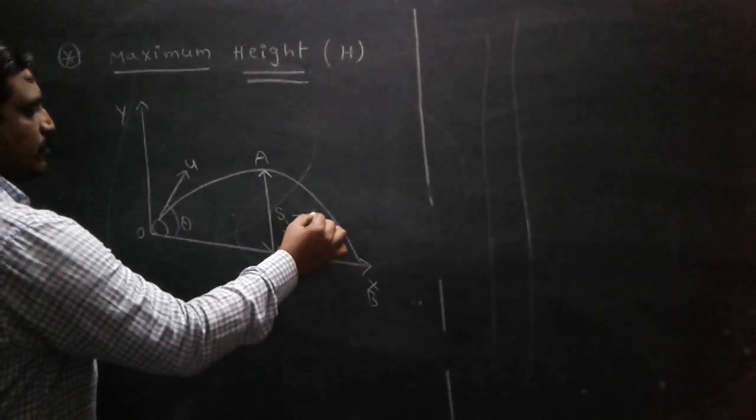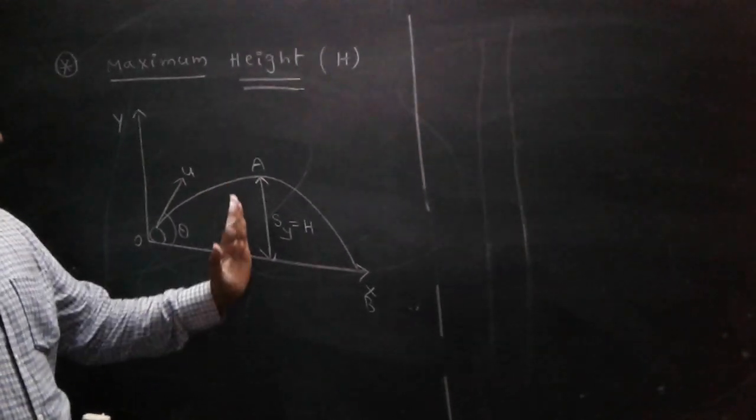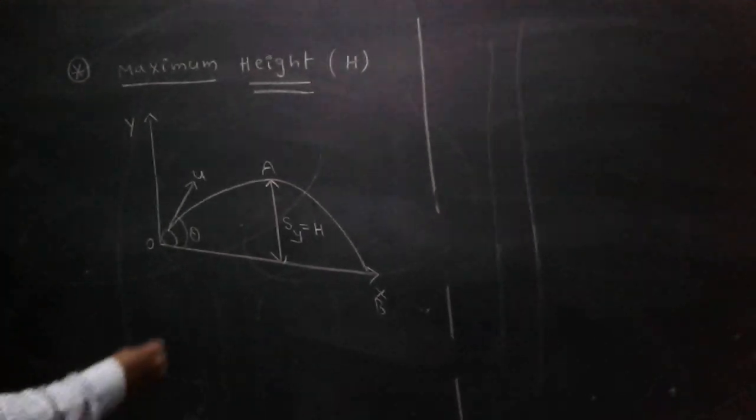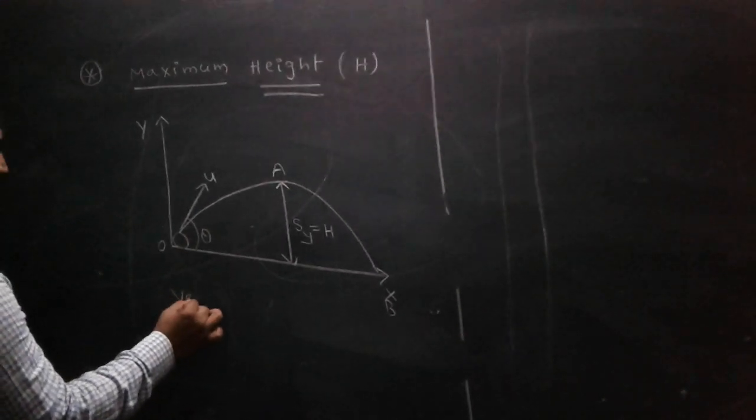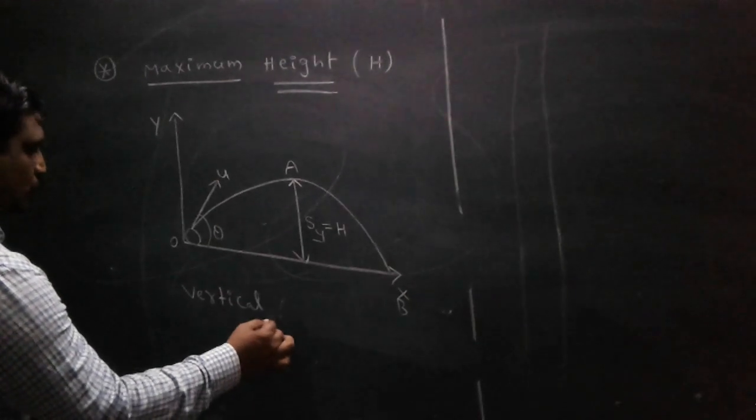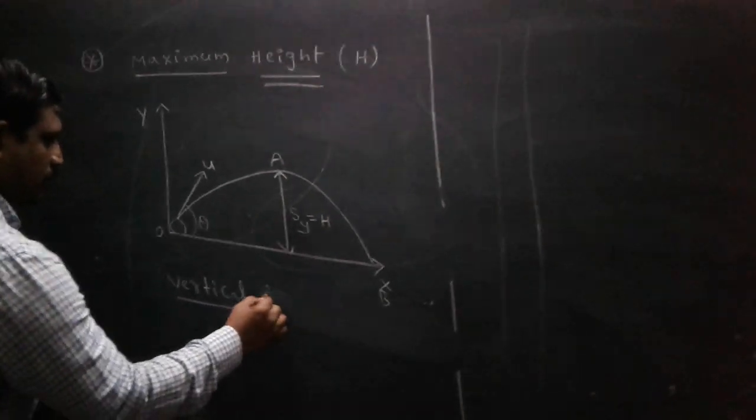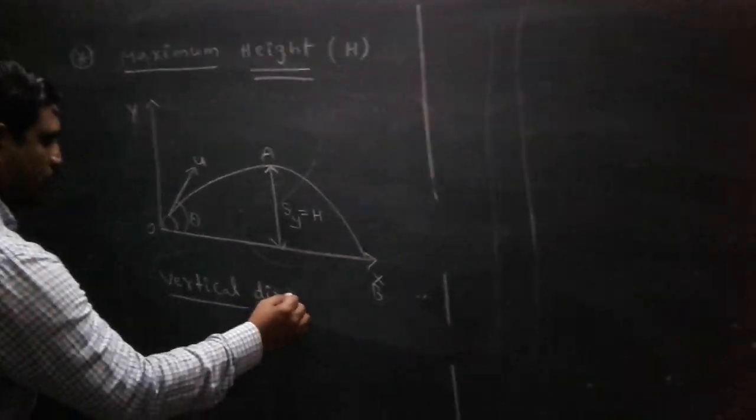This maximum height is vertical or horizontal? This is vertical. So to determine maximum height, I take the vertical direction along O to A.